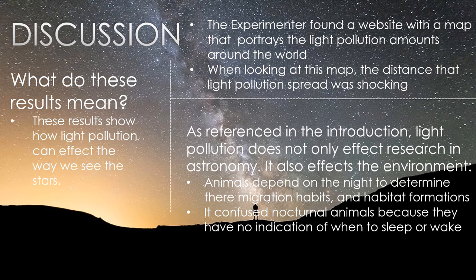Discussion. What do these results really mean? These results show how light pollution can affect the way we see the stars. The experimenter found a website, linked in the reference page, with a map that portrays the light pollution amounts around the world. When looking at this map, the distance that the light pollution spread was shocking — the amount of light pollution spreading beyond the city was very surprising. As referenced in the introduction, light pollution does not only affect research in astronomy; it also affects the environment.